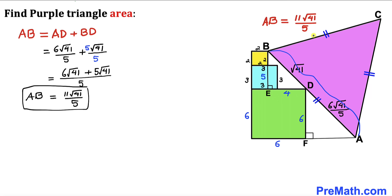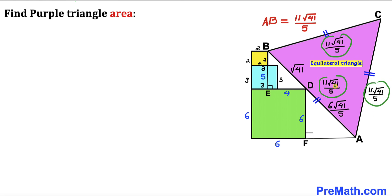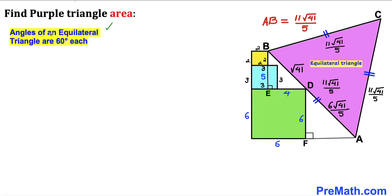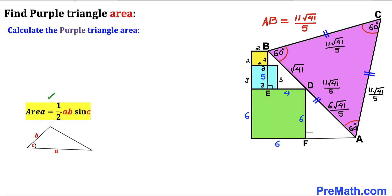So AB equals 11√41/5, and since this purple triangle is equilateral, all its side lengths are 11 times square root of 41 divided by 5 units. Recall that all angles of an equilateral triangle are 60 degrees each, so all three angles of this purple triangle are 60 degrees. Now let's calculate the area using the formula: area equals one half times A times B times sine of angle C.